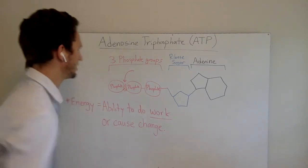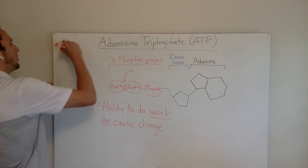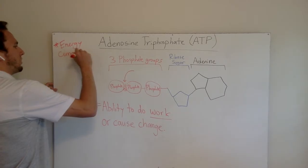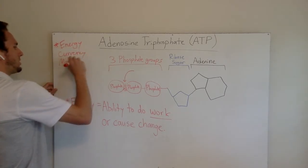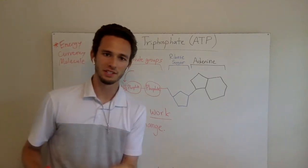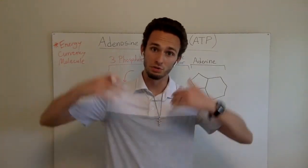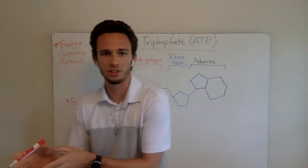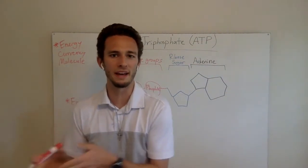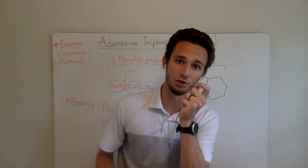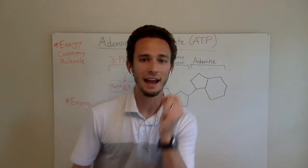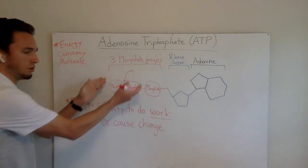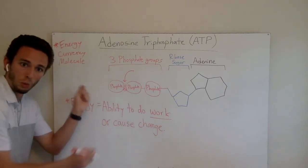The biggest difference is there are three phosphate groups, and here is the biggest key to ATP — this third bond between the phosphate. Now we call ATP the energy currency molecule for all cells. Why do we call it that? In the United States we use the U.S. dollar, in Europe they use the Euro, in Great Britain they use the pound — all different forms of currency. In your body, basically all life forms have to convert all the energy they eat into the usable currency molecule, which is ATP.